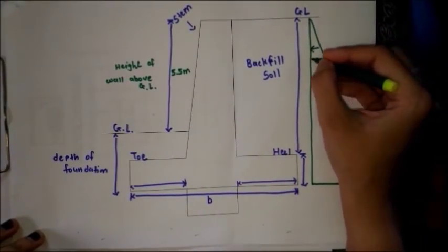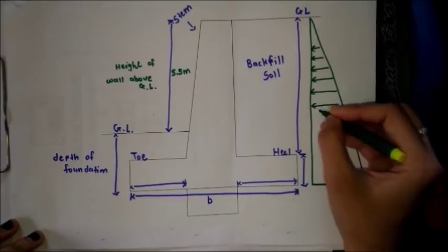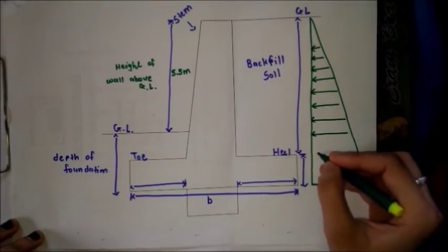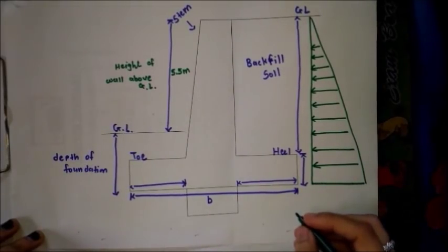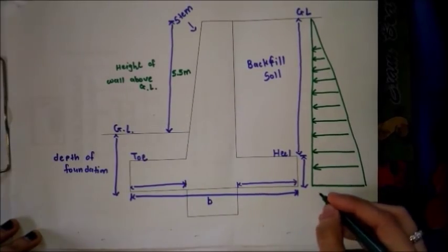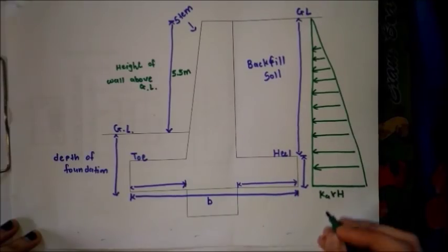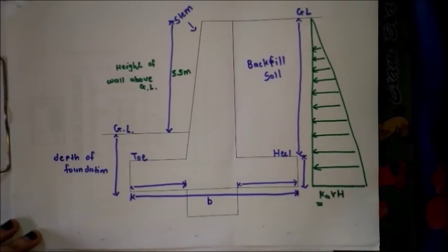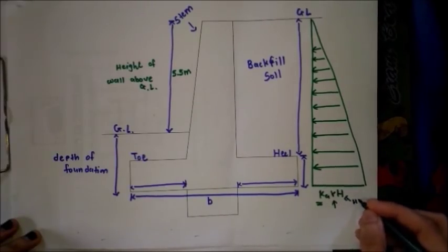This pressure is called the active earth pressure of the soil. The value of the active earth pressure at the base of the triangular pressure diagram is Ka × gamma × H, where Ka is the coefficient of earth pressure, gamma is the density of the earth, and H is the height of the wall.